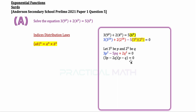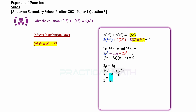For the first solution set, we set 3p equal to 2q. Changing p back to 3^k and q back to 2^k, we now have 3 times 3 to the power of k equals 2 times 2 to the power of k. Shifting the constant 2 from the right to the left gives us 3 over 2, and shifting 3 to the power of k from the left to the right gives us 2 to the power of k divided by 3 to the power of k.